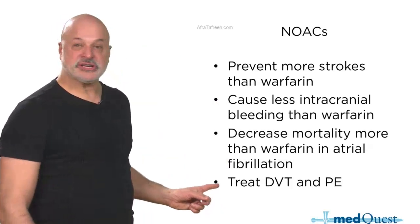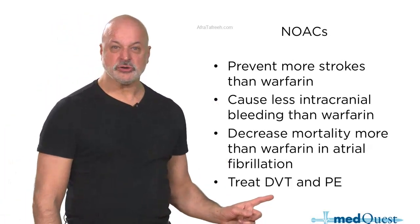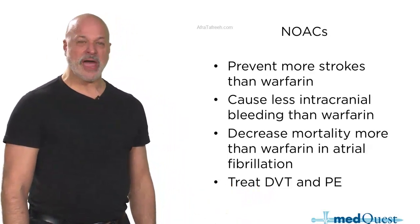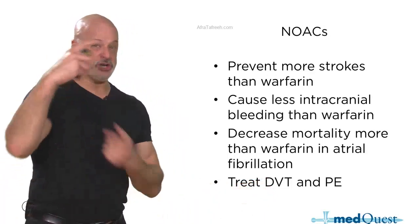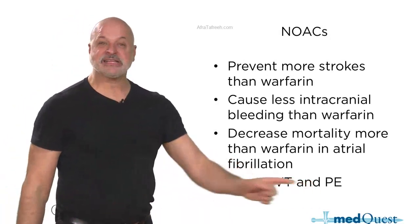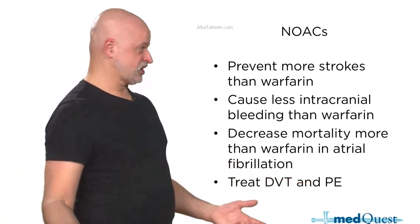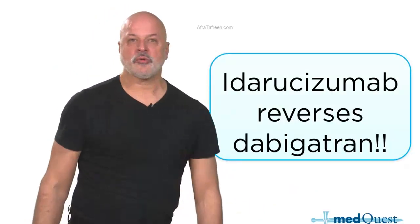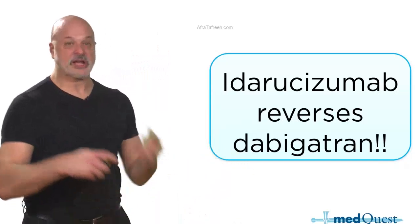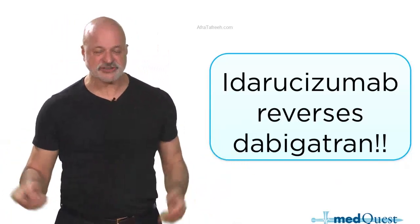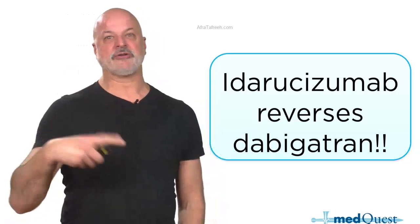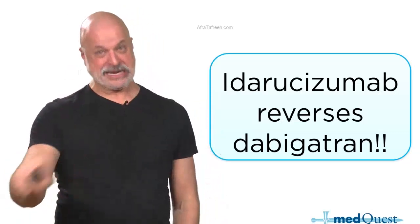NOACs also treat DVT and pulmonary embolus. For a DVT you shouldn't be using anything except a NOAC — it's therapeutic right away, no INR monitoring needed. For hemodynamically stable pulmonary embolus they're just as great. People used to worry about no reversal agent, but idorucizumab reverses dabigatran, and andexanet reverses the other factor Xa inhibitors. Rather than worry about reversing a bleed, it's better to just not get the bleed in the first place.